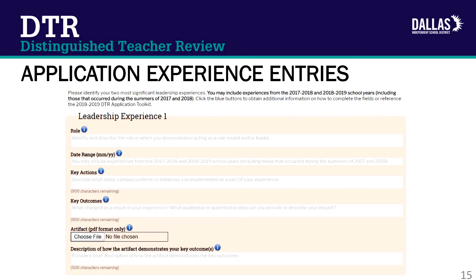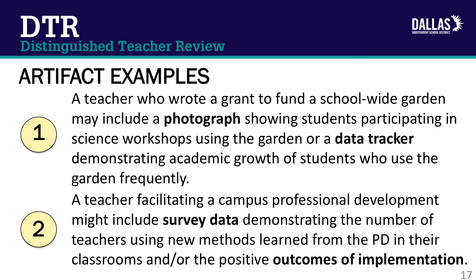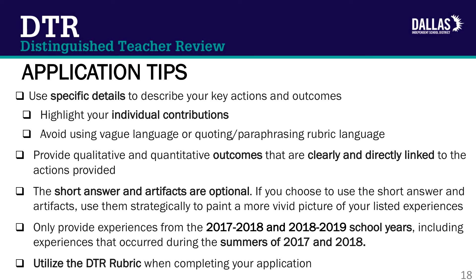Teachers will be asked to describe examples of their leadership, lifelong learning, and contributions to the profession. Teachers may include up to two experiences per domain. After a teacher enters key actions and outcomes for each experience, they may also upload an artifact for each experience. Artifacts are optional, but if used, should provide additional information about the impact of each experience. Artifact examples include: 1. A teacher who wrote a grant to fund a school-wide garden may include a photograph showing students participating in science workshops using the garden or a data tracker demonstrating academic growth of students who use the garden frequently. A teacher facilitating campus professional development might include survey data demonstrating the number of teachers using new methods learned from the PD in their classrooms and/or the positive outcomes of implementation.